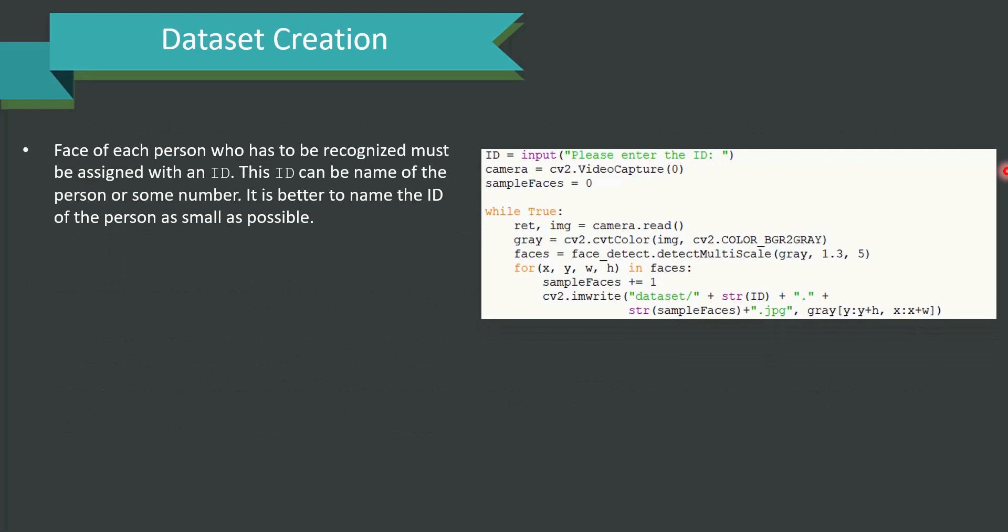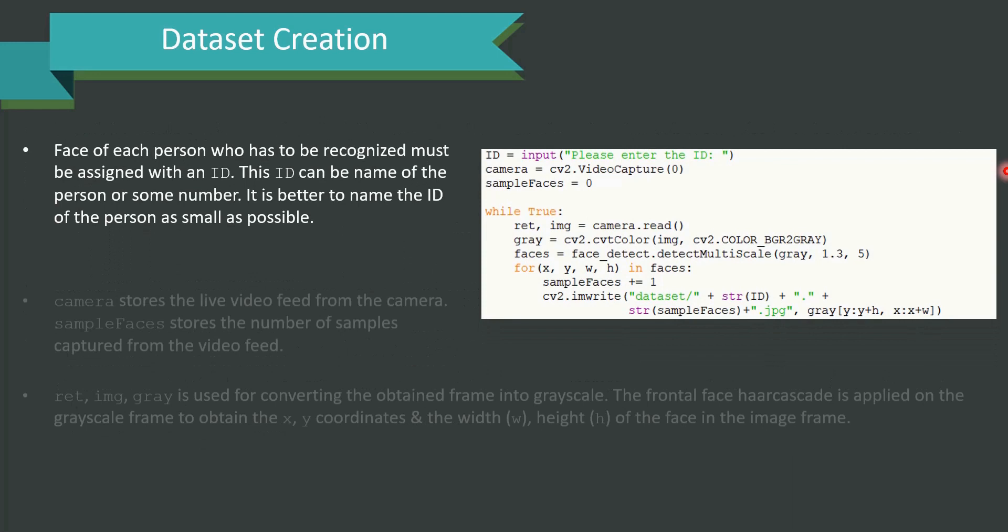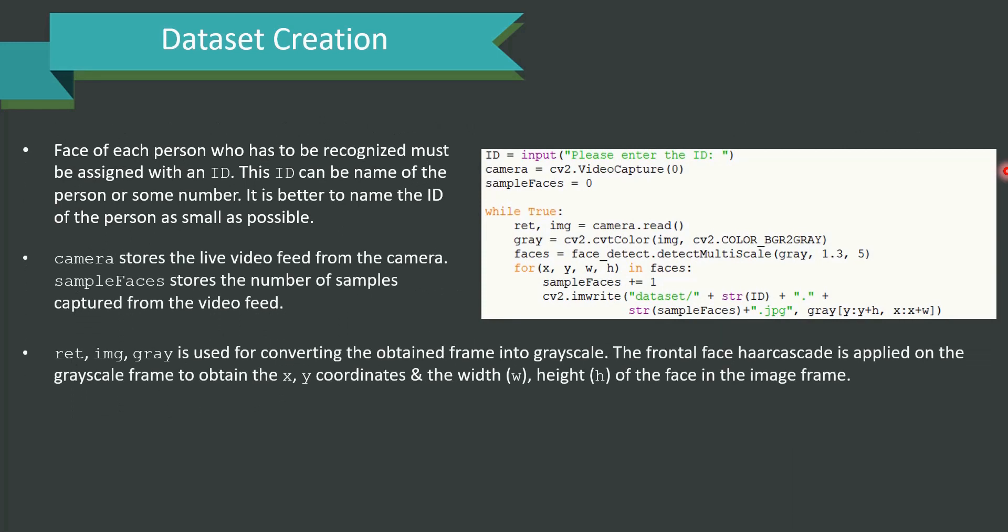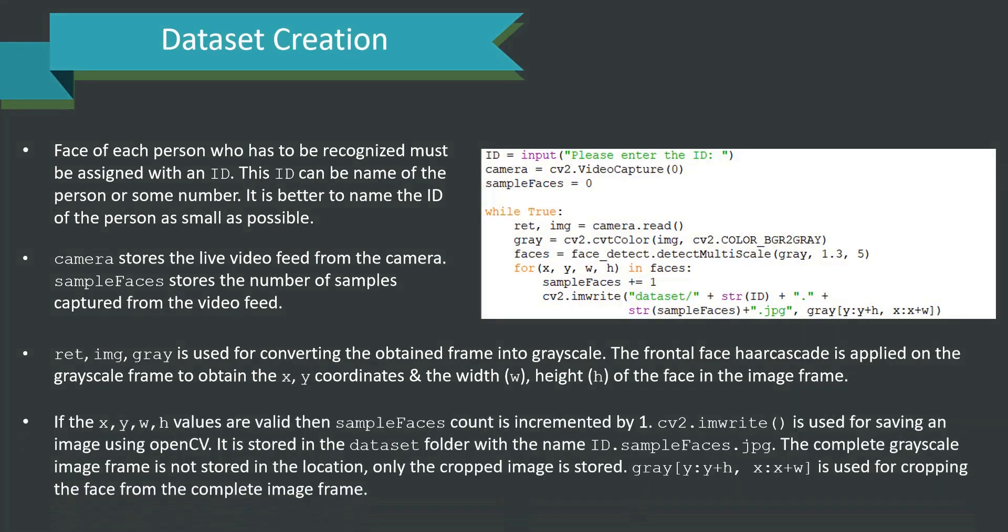Face of each person who has to be recognized must be assigned with an ID. This ID can be name of a person or some number. It is better to name the ID of the person as small as possible. Camera stores the live feed from the camera. Sample faces stores the number of samples captured from the video feed. RET, IMG and GRAY is used for converting the obtained frame into grayscale. The frontal face haar cascade is applied on the grayscale frame to obtain the x, y coordinates and the width w, the height h of the face in the image frame. If x, y, w, h values are valid, then sample faces count would be incremented by 1.